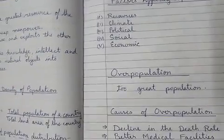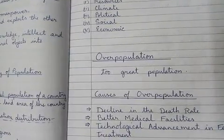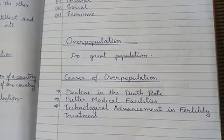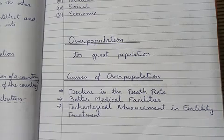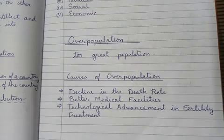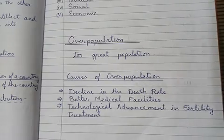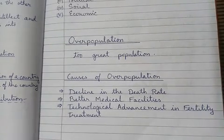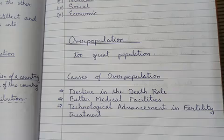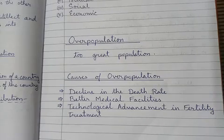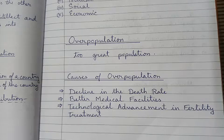Next topic is overpopulation — what is its meaning and what are its causes. Overpopulation means there are some countries facing the problem of a very large population. The term overpopulation means too great a population for a specific region to support — in common language, population explosion or population crash.